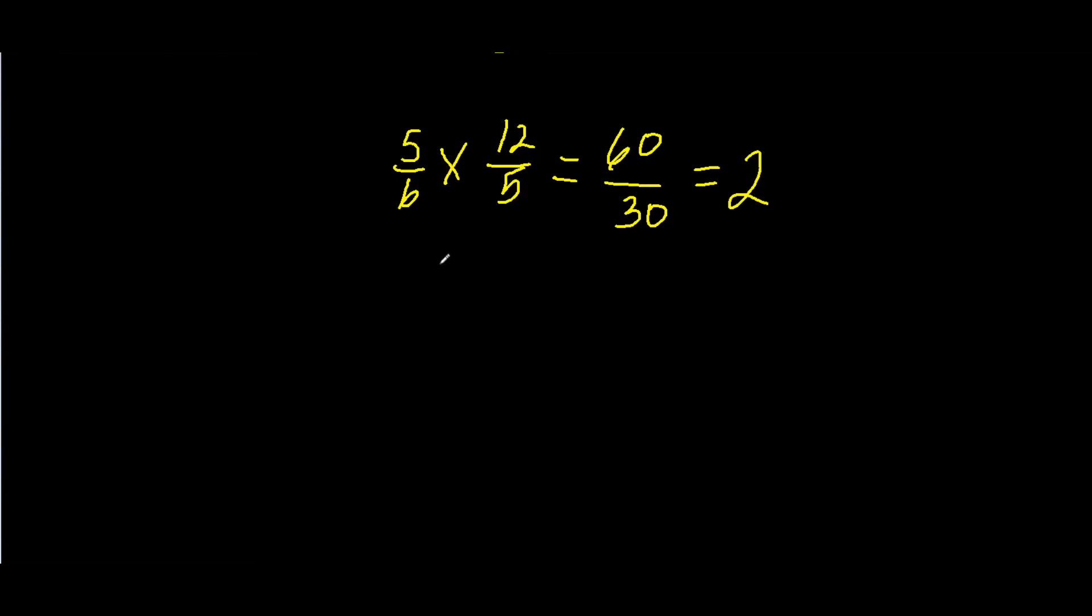And, the last one we're going to do is 17 thirty-seconds times 60 halves. So, 60 times 17, you can get your calculator out for this one. So, 60 times 17 is 1,020. And, 2 times 32 is 64. So, how many times will 64 go into 1,020? Well, it'll go in 15 times evenly with a remainder of 60, 60 sixty-fourths.